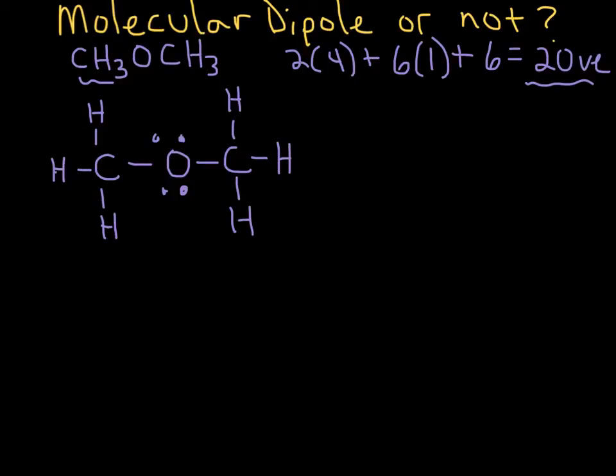And so look at that central oxygen and think about the steric number. Think about the steric number around oxygen. And so the steric number around oxygen is 4, right? Two lone pairs and two bonds to these methyl groups, the CH3 groups. So steric number is 4 around that oxygen.